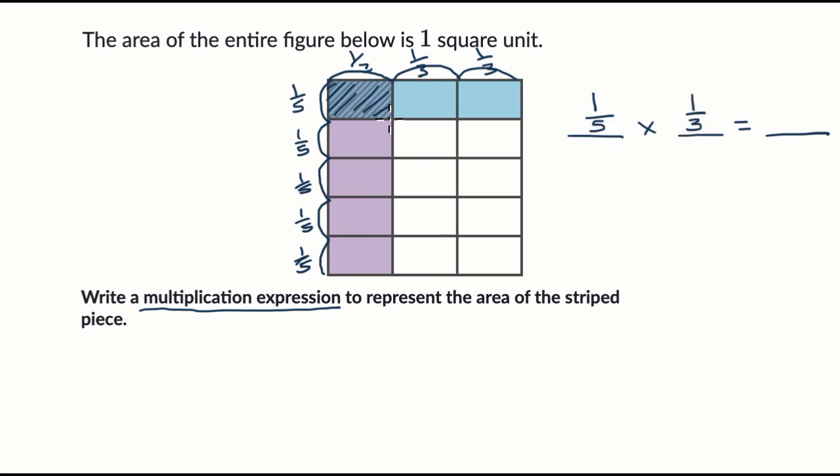And then what's that going to be equal to? Well, this whole thing is one square unit, and this is one of the 15 that we see. We can count them: one, two, three, four, five, six, seven, eight, nine, ten, eleven, twelve, thirteen, fourteen, fifteen. This is one of the 15 equal areas we have here. So this is going to be one fifteenth of the entire square.